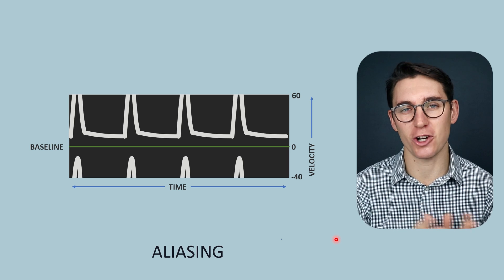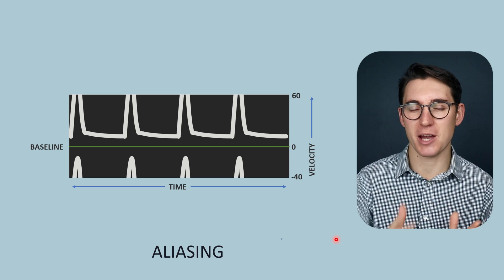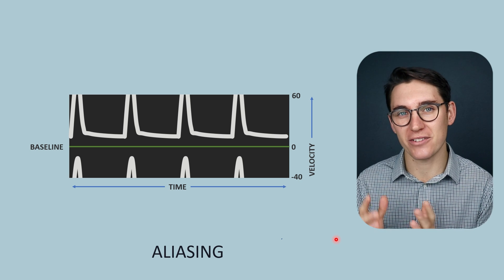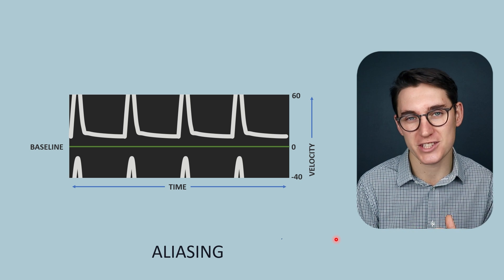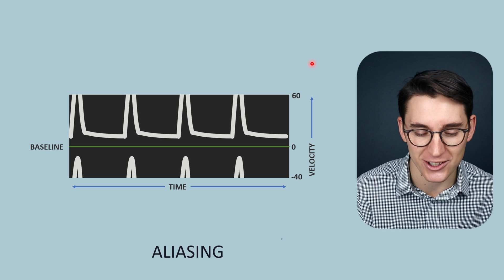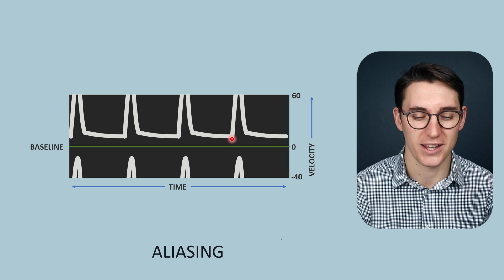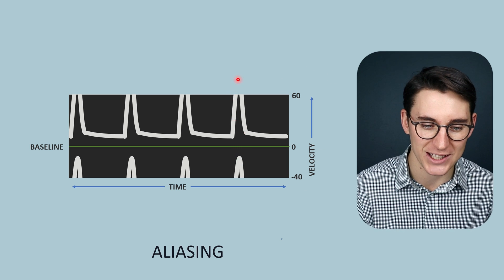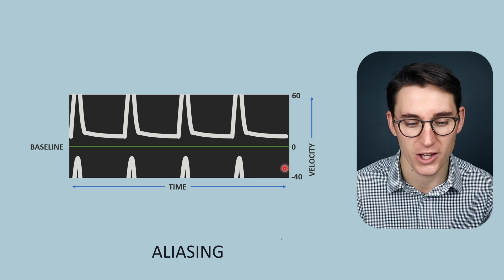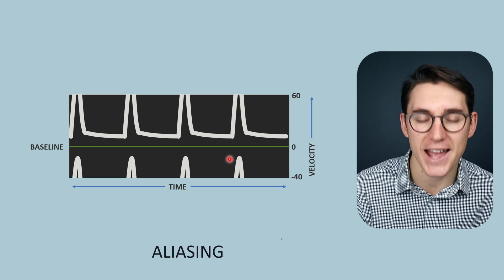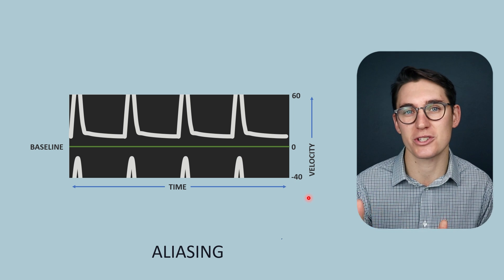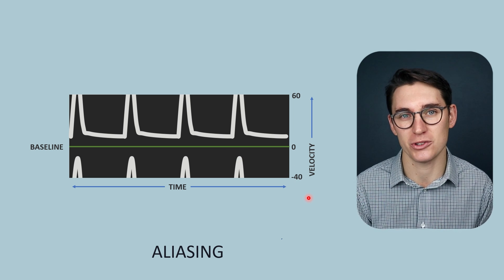We've spent some time looking at Doppler imaging, and one of the things that keeps coming up is this concept of aliasing, where the velocities calculated from the Doppler shifts measured with the ultrasound transducer are higher than our scale on the Doppler machine. This peak systolic velocity has wrapped around and is being displayed incorrectly on our velocity scale. We are no longer able to accurately measure this peak systolic velocity because the frequencies returning are higher than we are able to sample.